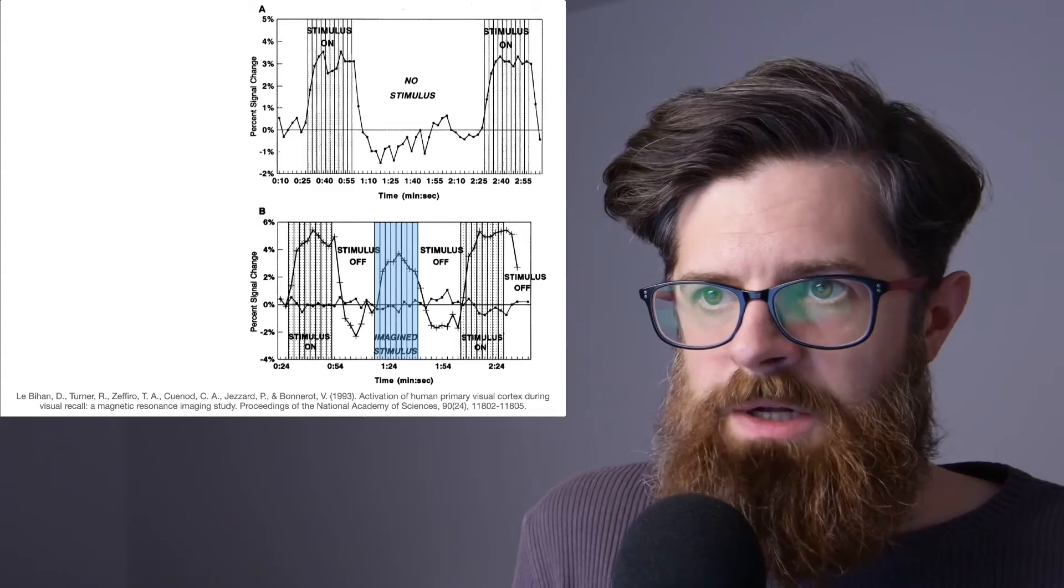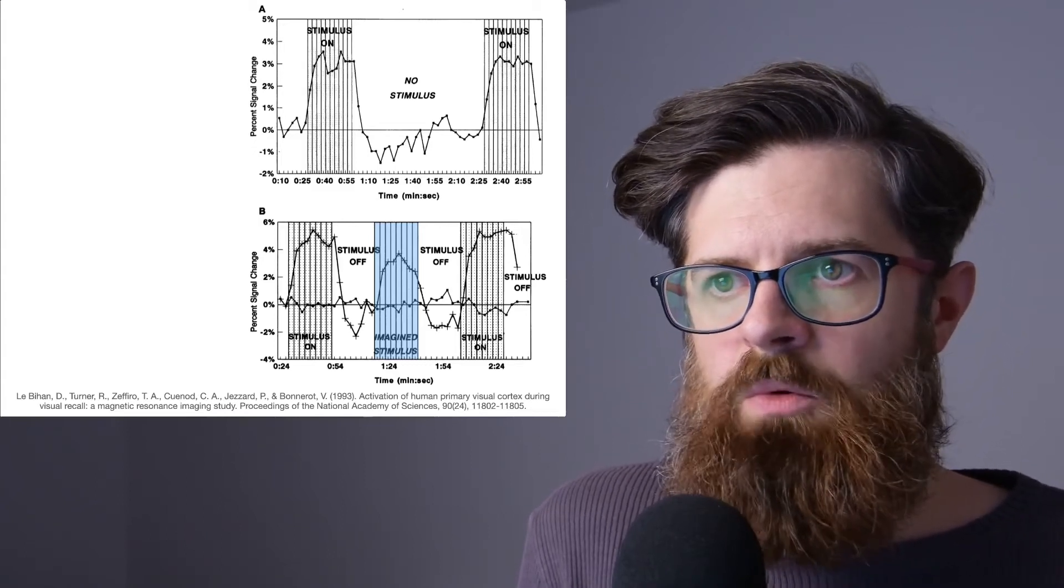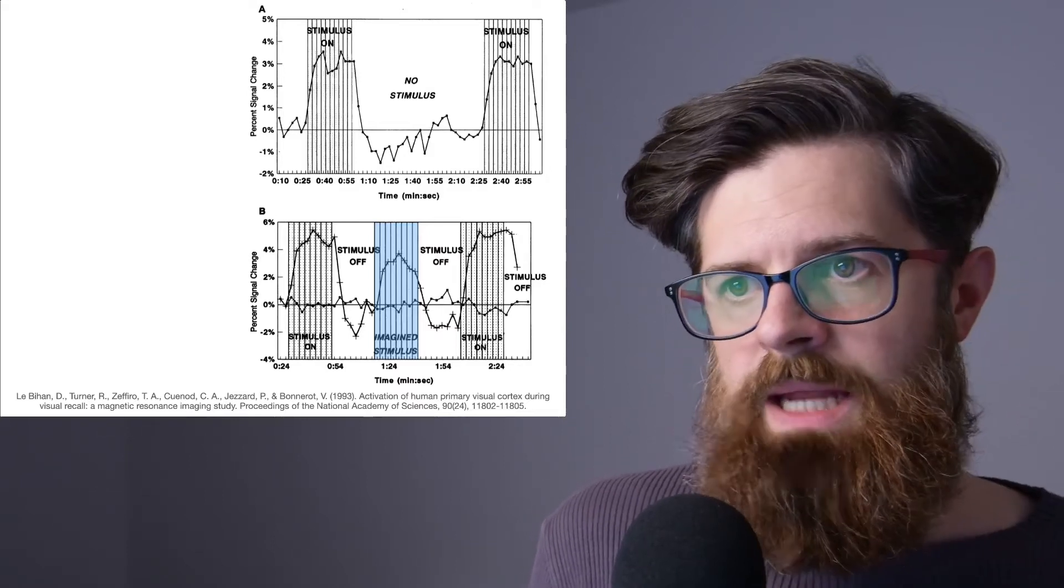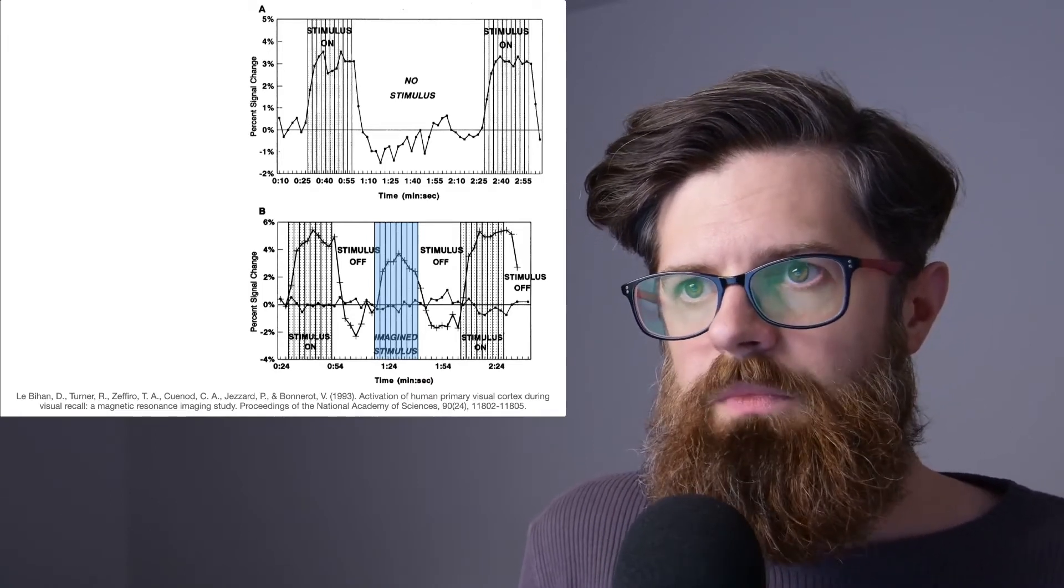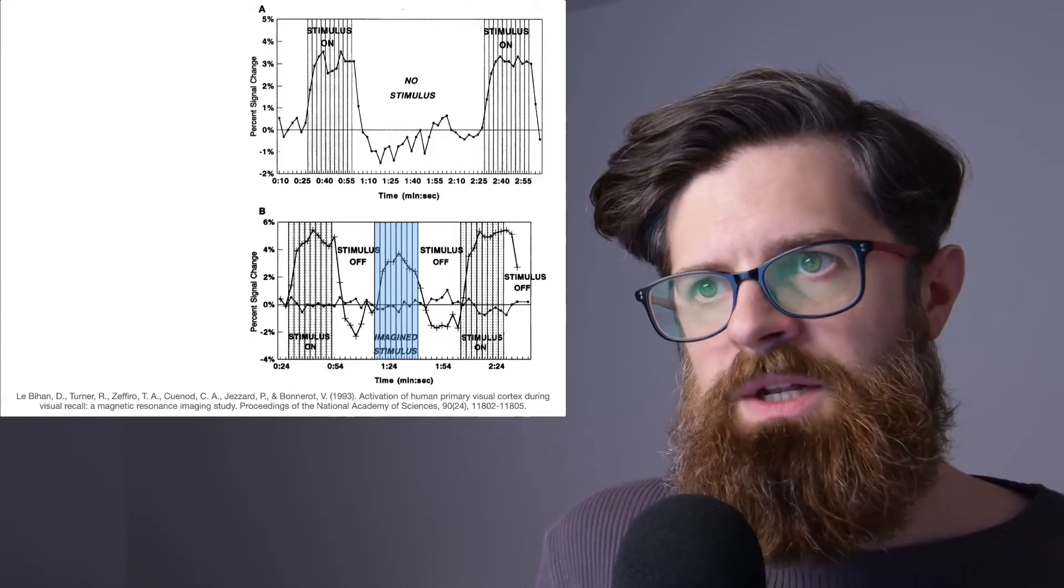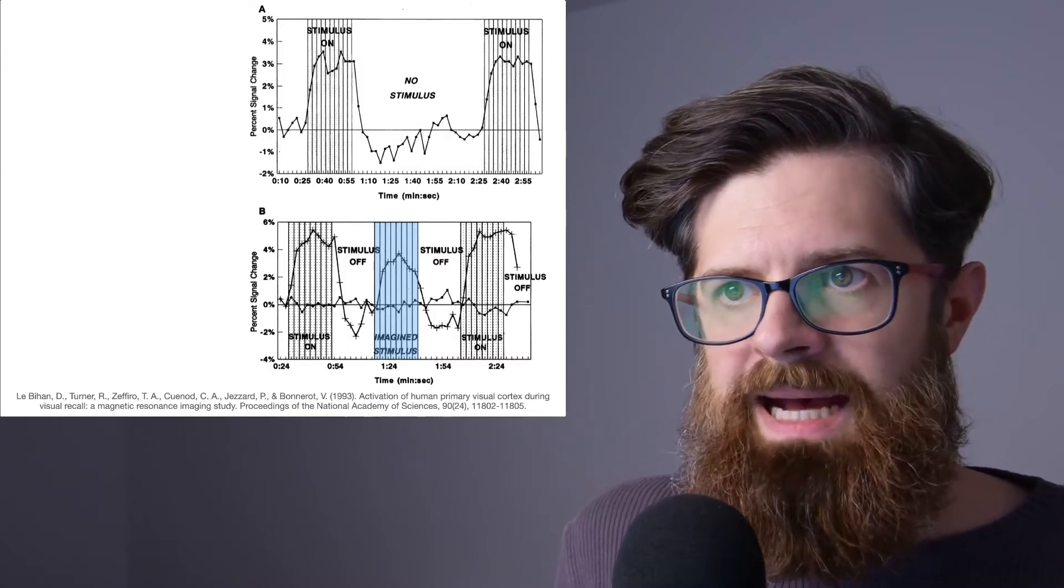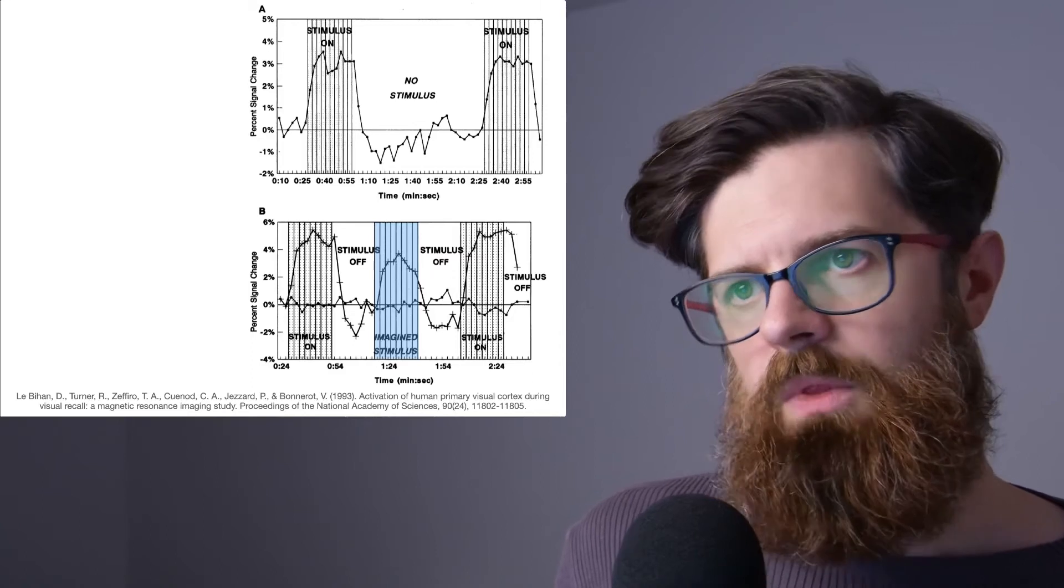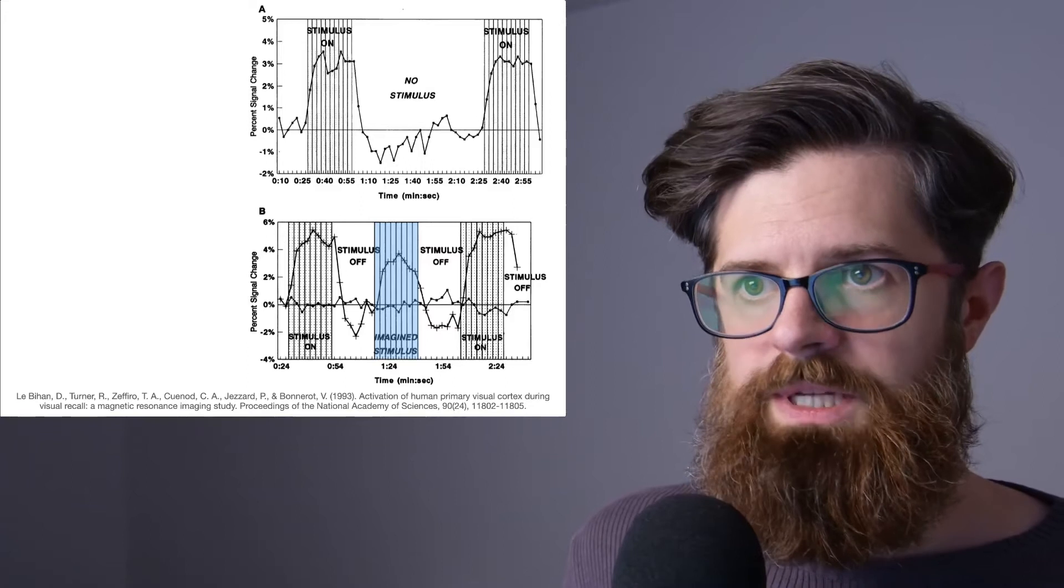Well, the participants were in an fMRI scanner and they were looking at the amount of activity in the primary visual cortex at the back of your head in order to see what was going on. The exact meaning of percent signal change doesn't really matter here, but we can think about it as how much activity was there in the visual cortex at certain times through this experiment.